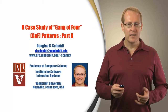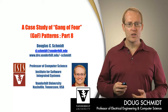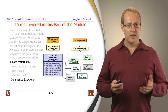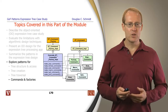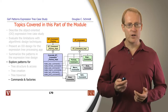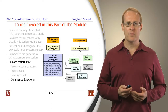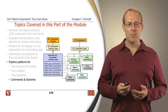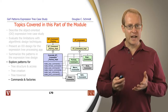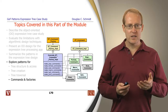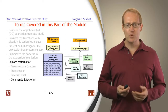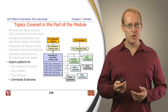Welcome to part 8 in the module that provides a case study of Gang of Four patterns. In other recent parts of the module, we presented a number of different patterns for our expression tree processing application. We started by exploring patterns for tree structure and access using the composite and bridge patterns, then talked about patterns for tree creation — interpreter and builder.